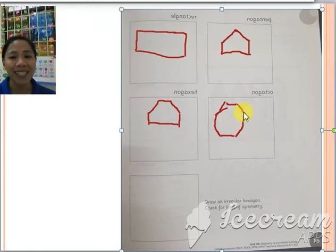How about this one? So you're going to draw an irregular hexagon. Check for lines of symmetry. Okay, hexagon, so draw hexagon.